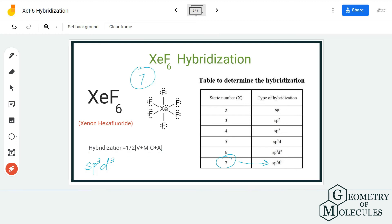If you put all the numbers correctly, you will come to know that the hybridization is 7, and again it corresponds to sp3d3 hybridization. Hence, XeF6 has sp3d3 hybridization.